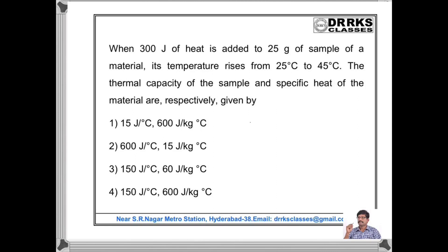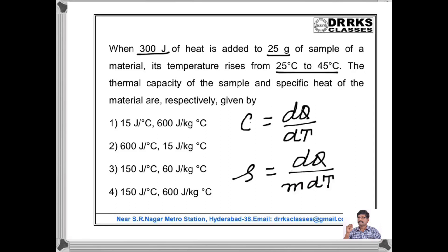In this problem we can see the difference between heat capacity and specific heat capacity. Heat capacity depends on mass and the nature of the material, whereas specific heat depends only on the nature of the material and is independent of mass. Here, the amount of heat supplied is 200 Joules, mass is 25 grams, and the rise in temperature is from 25°C to 45°C. Heat capacity C = DQ/DT = 200/(45−25) = 10 Joules per degree centigrade, and specific heat = DQ/(M·DT) = 600 Joules per kg per degree centigrade.